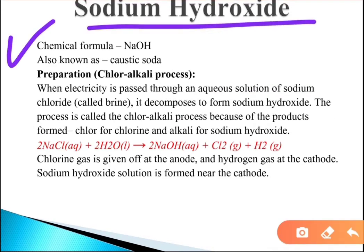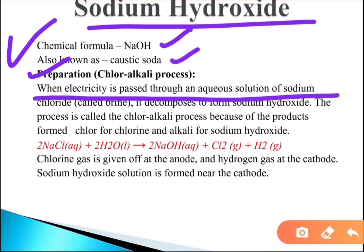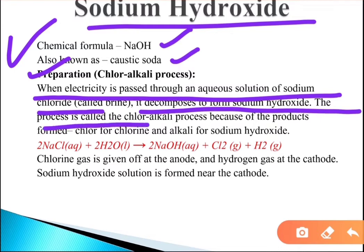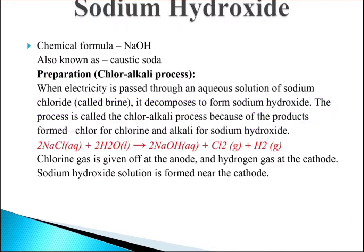The common name of sodium hydroxide is caustic soda and its chemical formula is NaOH. Sodium hydroxide is prepared when electricity is passed through an aqueous solution of sodium chloride, known as brine. This process is called the chloralkali process — 'chlor' for chlorine and 'alkali' for sodium hydroxide.